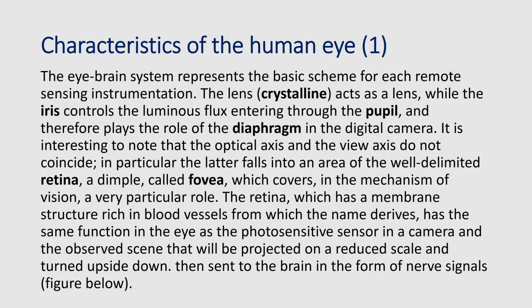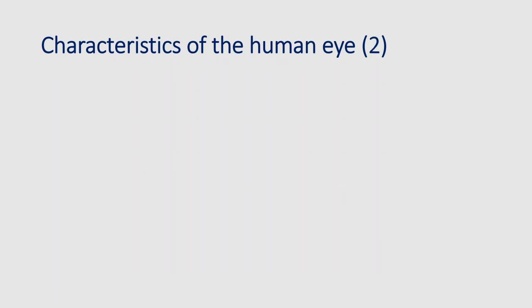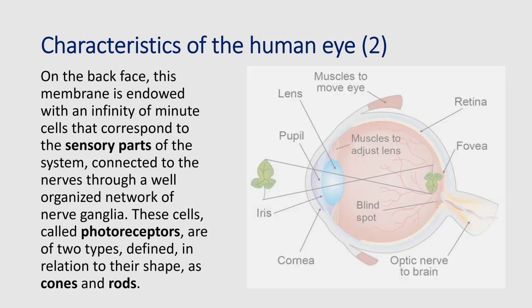It is interesting to note that the optical axis and the view axis do not coincide. The latter falls into a well-delimited area of the retina — the retina being the layer where the detectors of our eyes are located — called the fovea, which plays a very particular role in the mechanism of vision. The retina, which has a membrane structure rich in blood vessels, has the same function in the eye as the photosensitive sensor in a camera, and the observed scene is projected on a reduced scale and turned upside down, then sent to the brain as nerve signals.